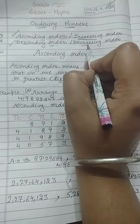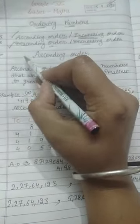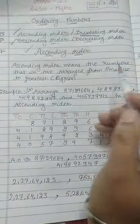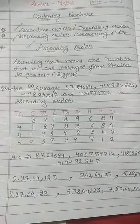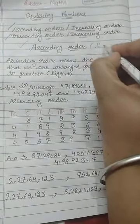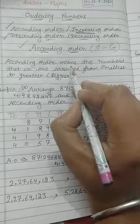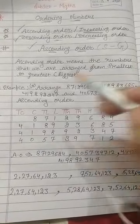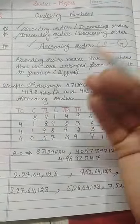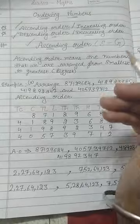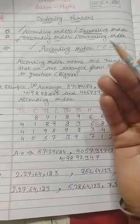First, we will talk about ascending order. Ascending order means the numbers are arranged from the smallest to the greatest. So if we want to arrange numbers in ascending order, we first write the smaller number, then bigger, then bigger — smallest to greatest.